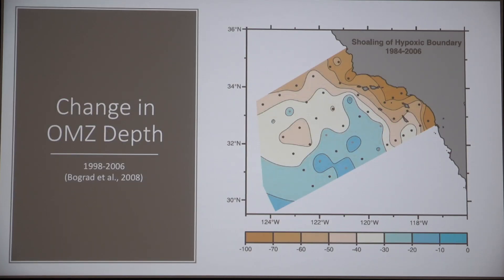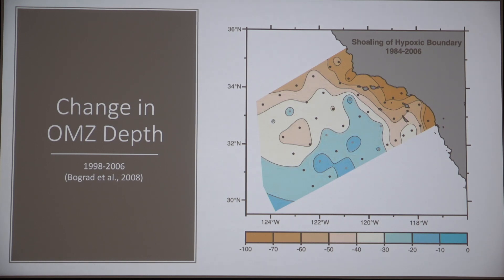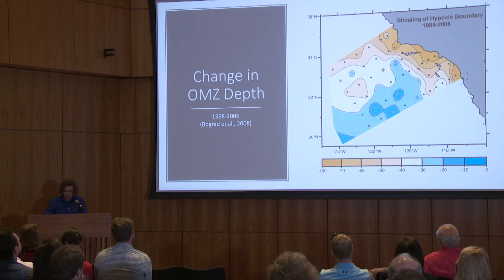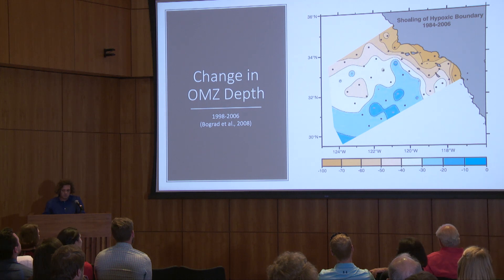To complicate the issue, the depth of the OMZ is changing due to human-induced climate change. The map here from Bograd et al. illustrates that rate of change — blue indicates areas of little change, and brown indicates areas of high change. The OMZ is squeezing fish to the surface closer to shore, where most interaction with fishing effort is likely to occur.